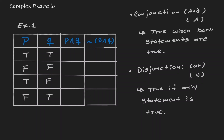Now let's pause and look at the symbol. Notice that here we are using the conjunction statement — this is an 'and' statement. So it's only going to be true when both statements are true. Within the first row, both statements are true, so the conjunction is true. In the second row, both statements are false, so the conjunction is false.